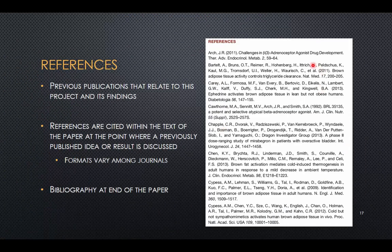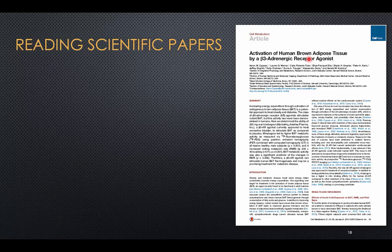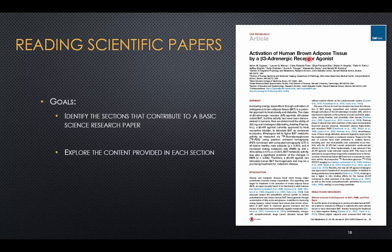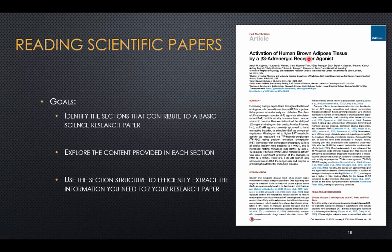The reference section should give you a sense of what other work is relevant when thinking about this particular study. One of the other values of the reference section or bibliography is that as you're developing your research paper, sometimes you'll find papers cited by a particular author that you can use too — you can add them to your reference list. You start off saying this is a good paper, I'd like to read it, and then from reading it you learn about two or three other papers to add to your database and extract information from as well. Our goals were to identify the sections that contribute to the paper, explore the content provided in each section, and see how we can extract that information for our own report or research.